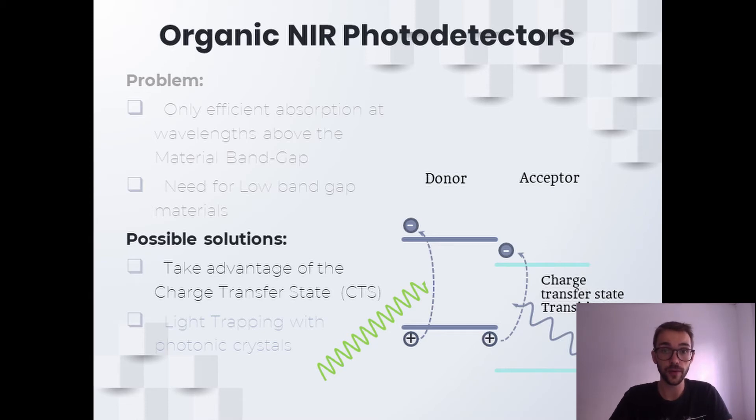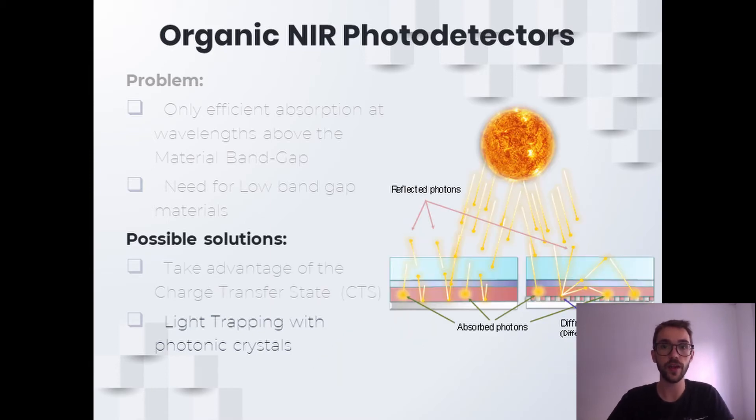In order to increase the absorption, we propose a light-trapping strategy with photonic crystals so that photons have a longer path within the active layer and a higher chance of being absorbed. Not only that, but by tuning the lattice parameter of the photonic crystal, we could in principle select which wavelengths get diffracted, being able to tune the wavelength response of the photodetector.